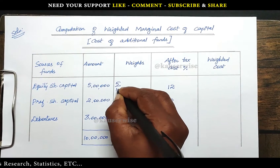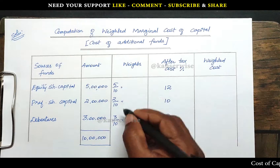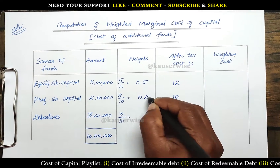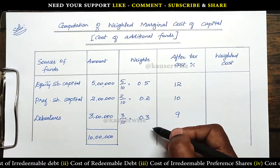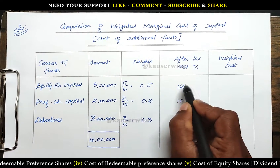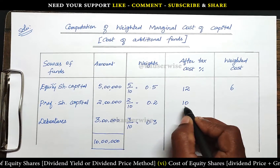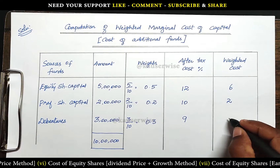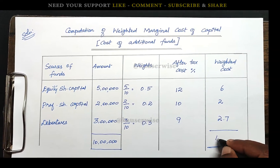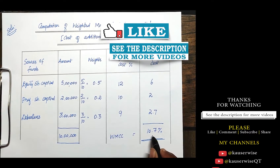With a total of 10,00,000, the weights are: equity 5/10 = 0.5; preference 2/10 = 0.2; debentures 3/10 = 0.3. The weighted cost is calculated as weights multiplied by after tax cost: 0.5 × 12% = 6%; 0.2 × 10% = 2%; 0.3 × 9% = 2.7%. Total: 6 + 2 + 2.7 = 10.7%. So the weighted marginal cost of capital is 10.7%.